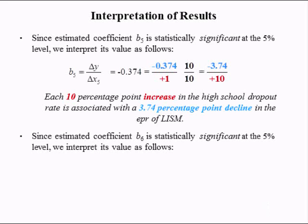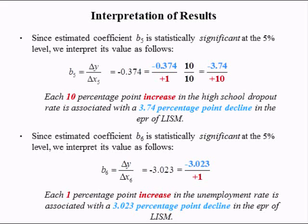Since estimated coefficient B6 is statistically significant at the 5% level, we interpret its value as follows. B6 is the change in Y over the change in X6, which we found to be negative 3.023. We don't multiply by 10 over 10 here because X6 is the unemployment rate, which in America is not going to jump by 10 percentage points — it'll jump by maybe 1 percentage point. So each 1 percentage point increase in the unemployment rate is associated with a 3.023 percentage point decline in the employment population ratio of low-income single mothers.